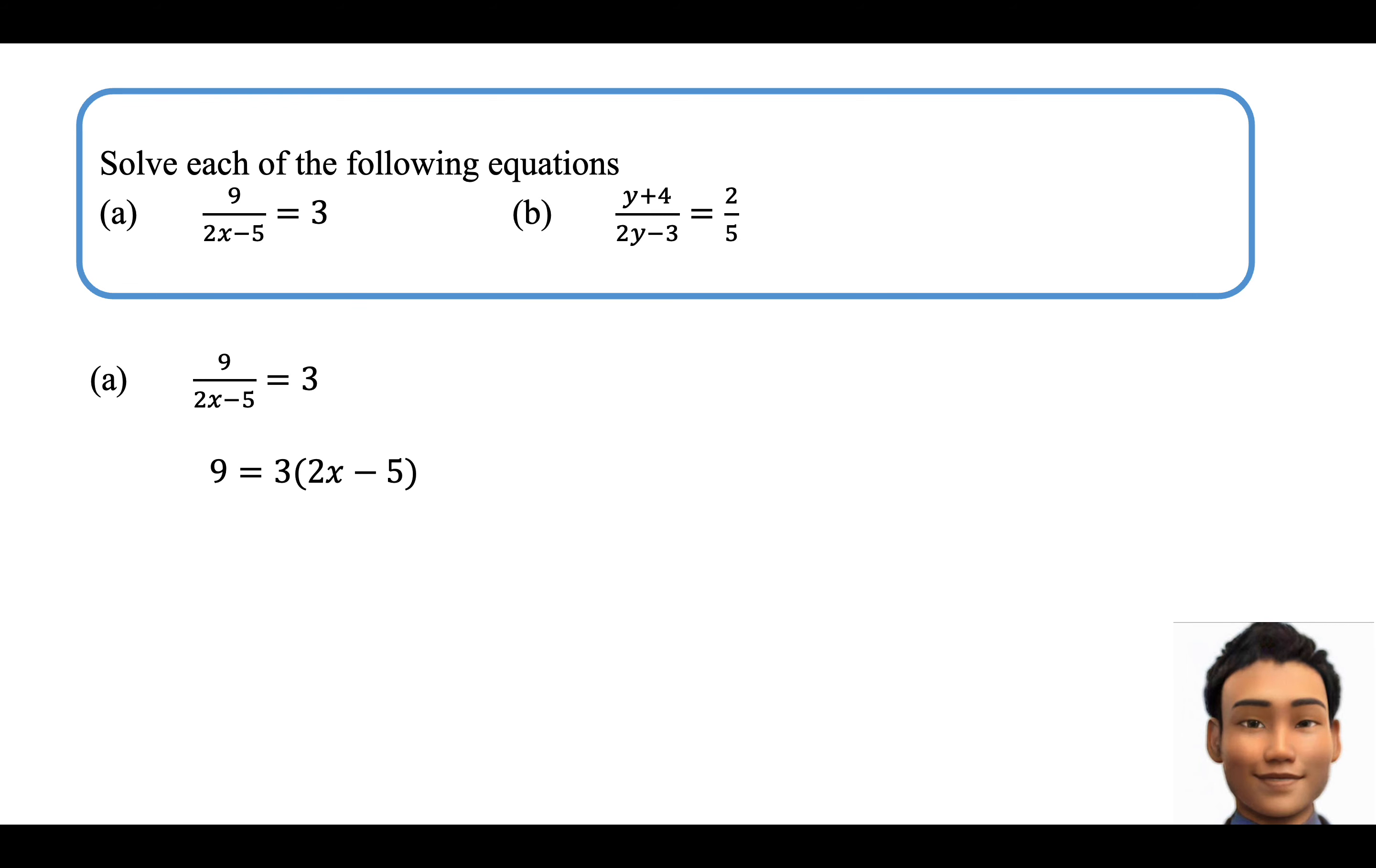That results in 9 equals to 3 times, in brackets, 2x minus 5. We will now proceed to expand, giving us 9 equals to 6x minus 15. Simplifying to 9 plus 15 equals to 6x, with the result of 6x equals to 24.